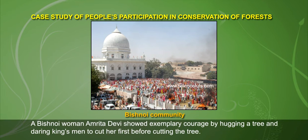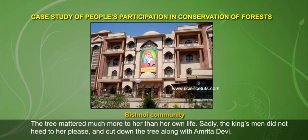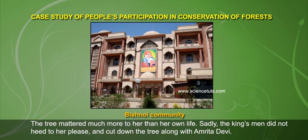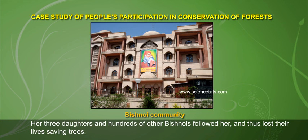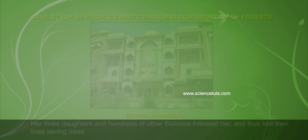A Bishnoi woman, Amrita Devi, showed exemplary courage by hugging a tree and daring the king's men to cut her first before cutting the tree. The tree mattered much more to her than her own life. Sadly, the king's men did not heed her pleas and cut down the tree along with Amrita Devi. Her three daughters and hundreds of other Bishnois followed her example and thus lost their lives saving trees.